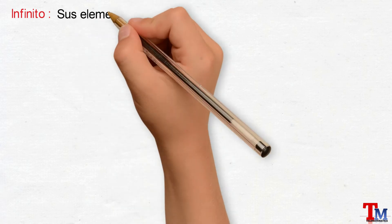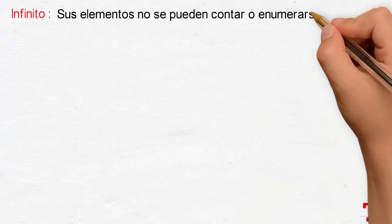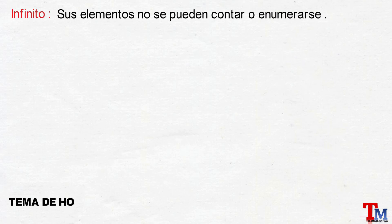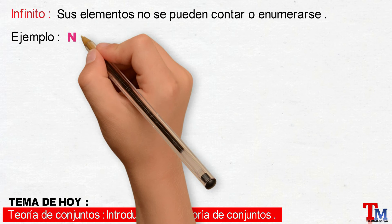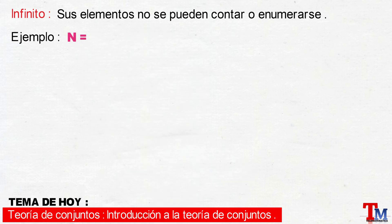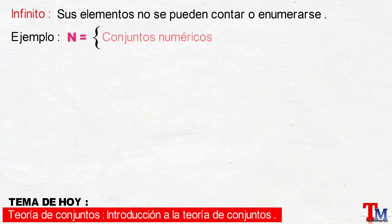Segunda clasificación, conjunto infinito, que se define como: sus elementos no se pueden contar o enumerarse. Por ejemplo, tenemos el conjunto N, definido por conjuntos numéricos.